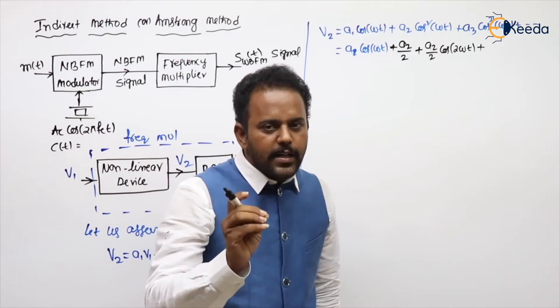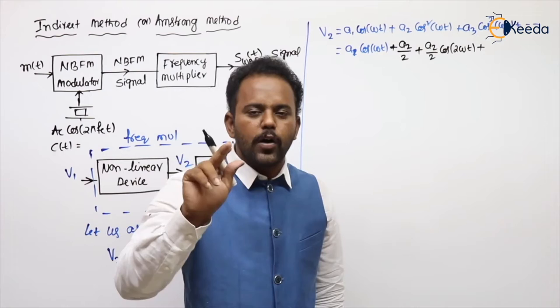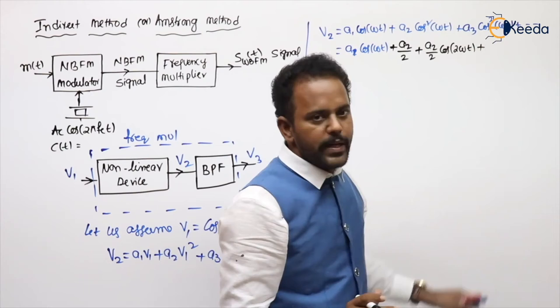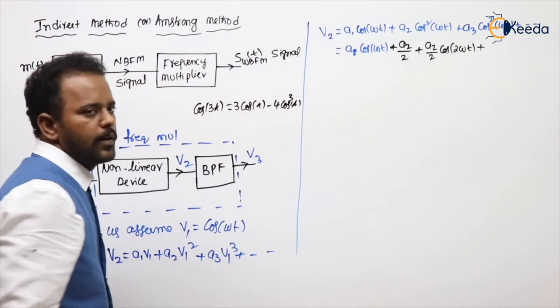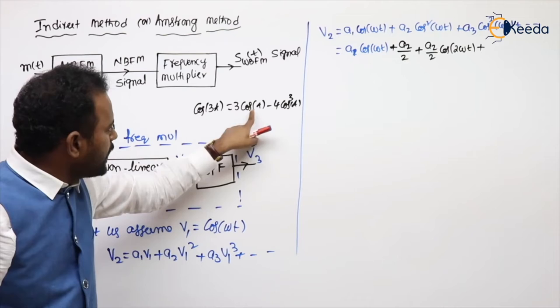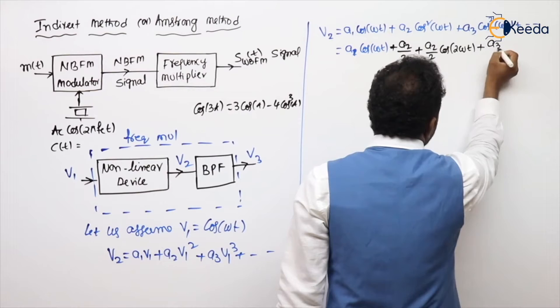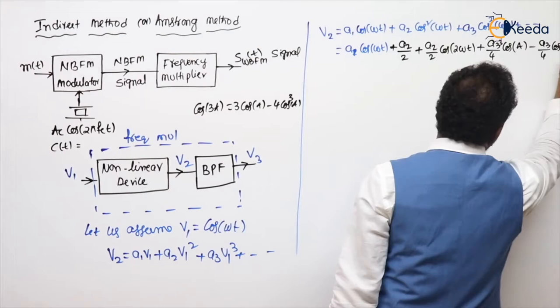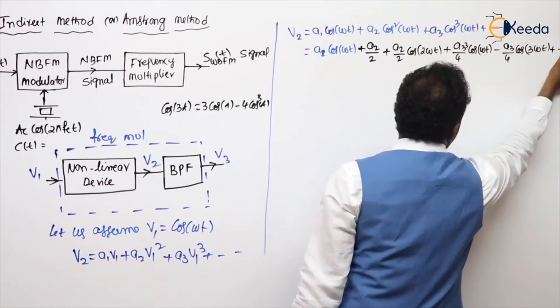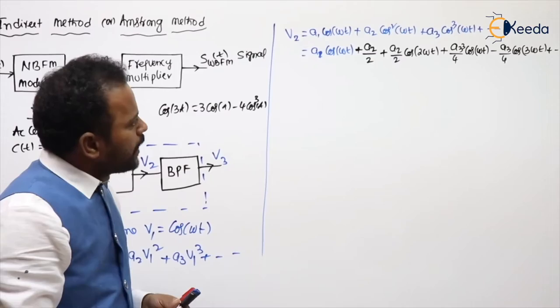The cos 3A formula is: cos(3A) = 3cos(A) − 4cos³(A). Rearranging to get cos³(A): cos³(A) = (3cos(A) − cos(3A))/4. So the cos cube term becomes (a3/4)·cos(3ωt) + and so on. We have an infinite number of terms in the expansion.